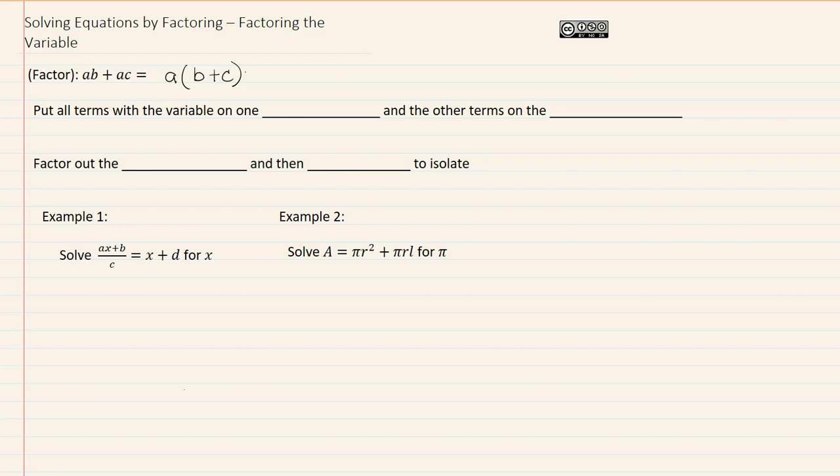So when we're solving an equation or formula that has a lot of variables in it, and we're solving for a specific variable, we want to put all the terms with the variable that we're solving for on one side, and then put all the other terms on the other side of the equal sign. Then we're going to factor out the variable that we're solving for, and then we're going to divide by the other stuff to isolate.